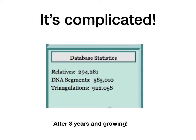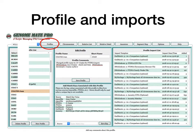Here are my stats — this is what's in my database. I've got 294,000 relatives, 585,000 DNA segments, and nearly a million triangulations, and that's after using it for three years. I'm constantly adding segments, triangulations, and relatives, so it's growing all the time. How can we possibly manage that through a spreadsheet? I don't believe it can be done that way.